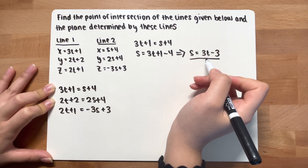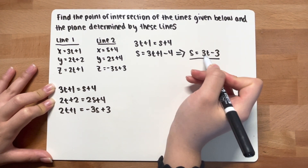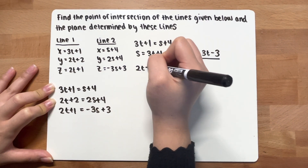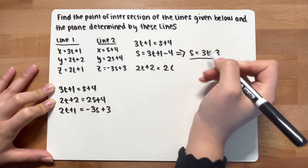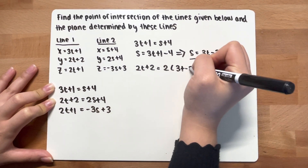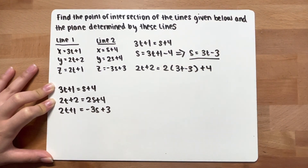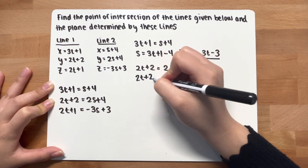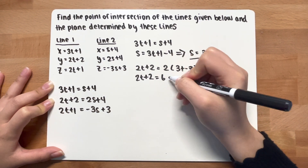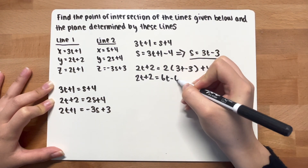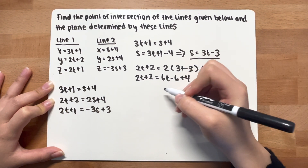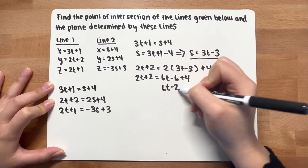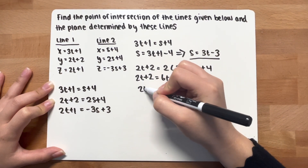Now you are going to substitute this value for s into the y-equation. So you have 2t + 2 = 2(3t - 3) + 4, which gives you 2t + 2 = 6t - 6 + 4. Simplifying, -6 + 4 is -2, so you get 6t - 2 = 2t + 2.